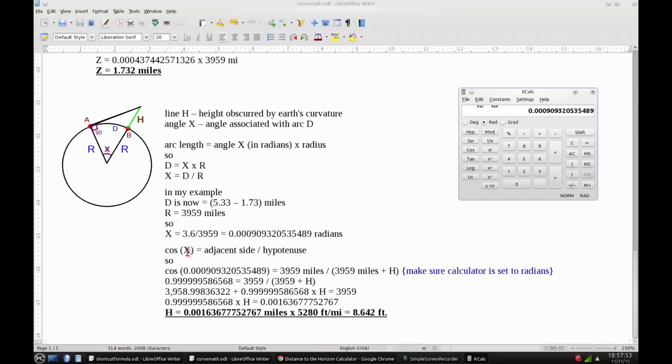So now we're going to use our cosine formula. So cosine of this number is going to equal 3,959 divided by 3,959 plus H.